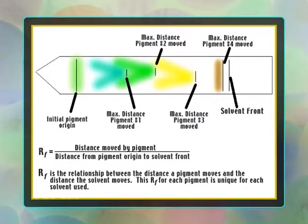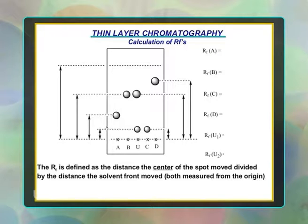To quantify the results, the distance travelled by the substance being considered is divided by the total distance travelled by the mobile phase. The mobile phase must not be allowed to reach the end of the stationary phase. This ratio is called the retention factor or RF. In general, a substance whose structure resembles the stationary phase will have a low RF, while one that has a similar structure to the mobile phase will have a high retention factor. Retention factors are characteristic but will change depending on the exact conditions of the mobile and stationary phases.